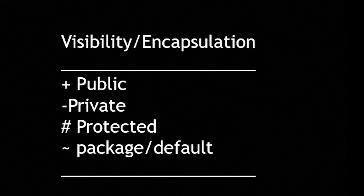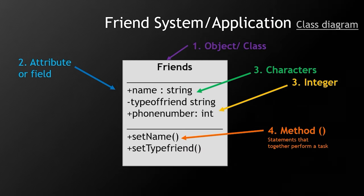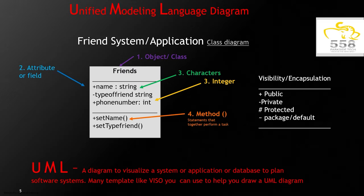You can see here that we have our fields or attributes, and on the right we have our characters or integers that apply to them. We also have our methods symbolized here within this diagram.